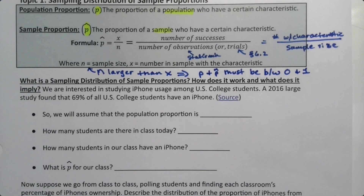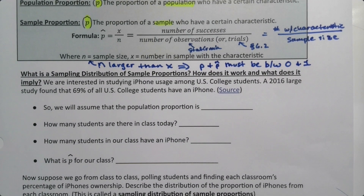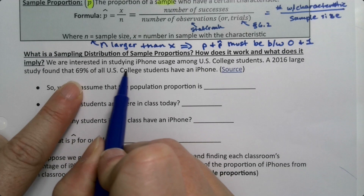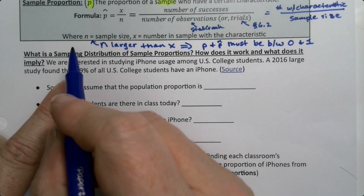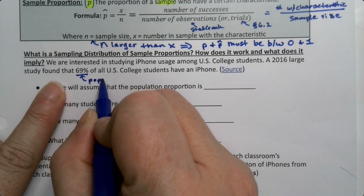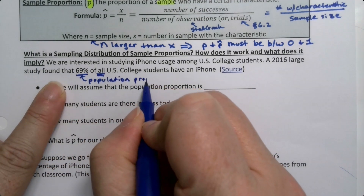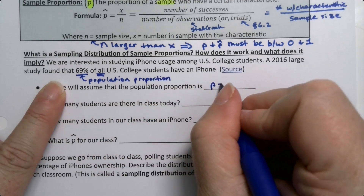Let's look at the sampling distribution of sample proportions with an example. We're interested in studying iPhone usage among US college students. A 2016 large study found that 69% of all US college students have an iPhone, so we'll assume the population proportion P is 0.69 — it says 'all' right there, so that's our population proportion.